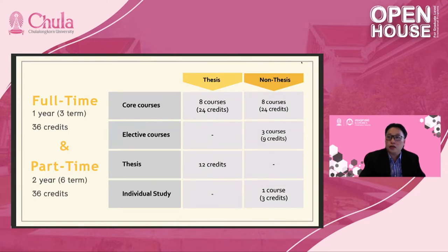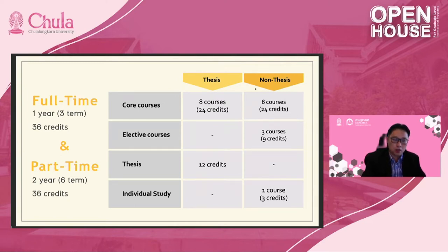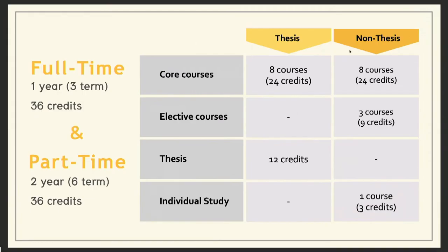For the full-time one-year program, we have three terms and 36 credits total. For thesis and core courses, there are eight core courses totaling 24 credits. For non-basis students, there are eight courses at 24 credits, and non-basis students must take three elective courses — nine credits — plus one individual study course worth three credits.